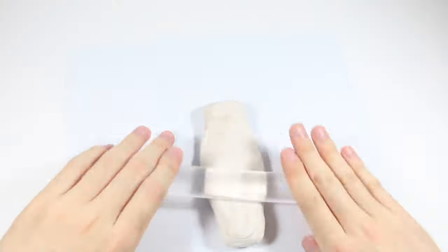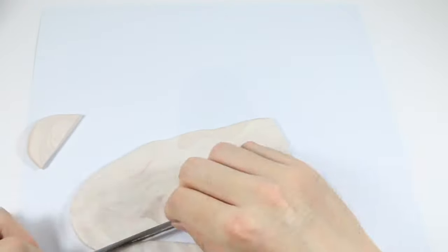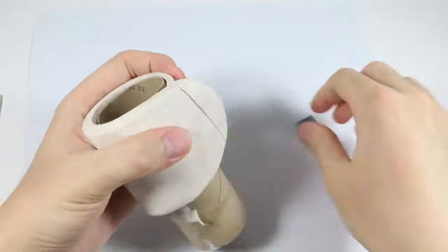So to make the pot we're taking some scrap polymer clay and polymer clay is a type of clay that hardens when you bake it in the oven. And here I'm wrapping around a toilet paper roll to get the size and I'm cutting off the excess.